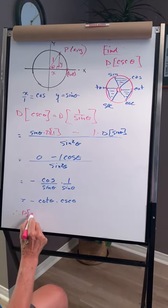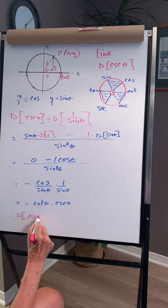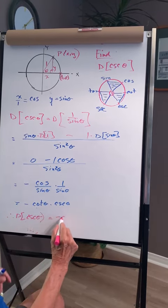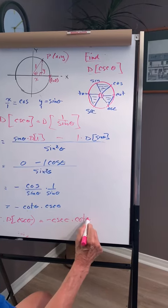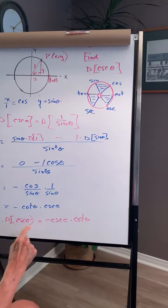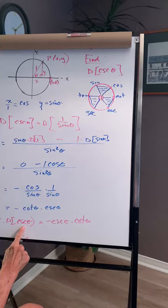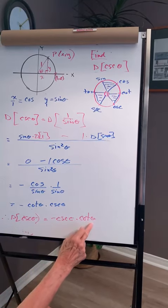The derivative of cosecant theta is negative cosec theta cotangent theta. Cotangent starts with a c. It's negative: the derivative of cosec is minus cosec cotan.